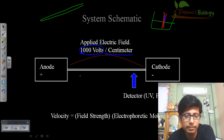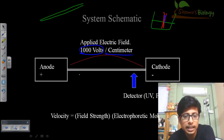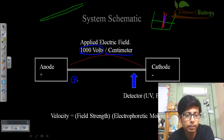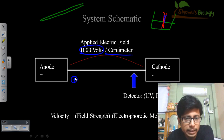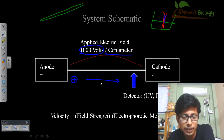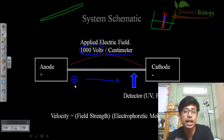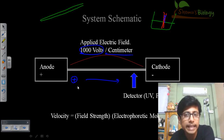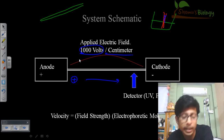We have an anode and cathode, connected by the capillary. A positively charged chemical molecule placed in the capillary will migrate from the positive towards the negatively charged region, attracted toward the cathode, moving through the capillary. As it moves, it also interacts with the wall of the capillary, which is produced in a specific way that we will see.